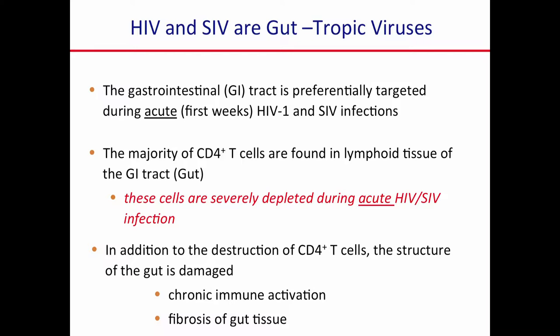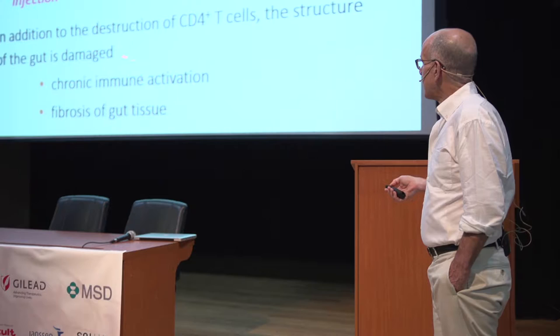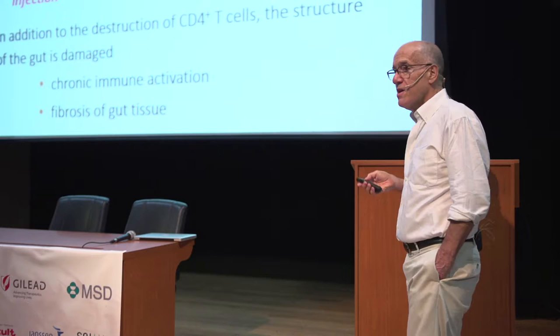Dr. Duick has done some of the really important work in this area — that in addition to the destruction of the CD4 T cells in the gut, the structure of the gut is damaged in a very significant way. That damage, just to the structure of the gut, leads to chronic immune activation and the fibrosis of gut tissue. Many aspects of AIDS actually relate to these problems, in addition to the destruction of the CD4-positive T cells.